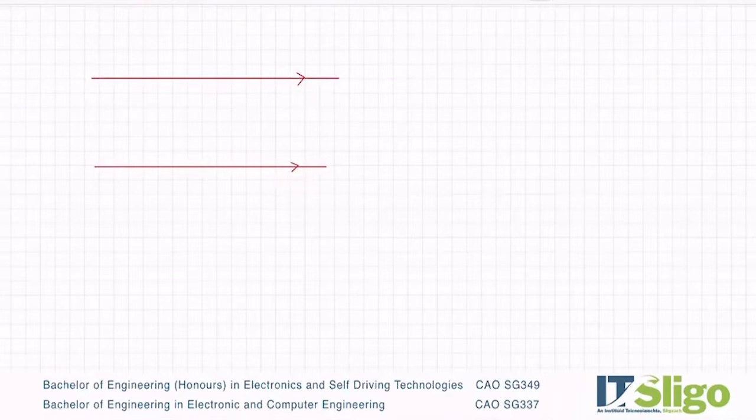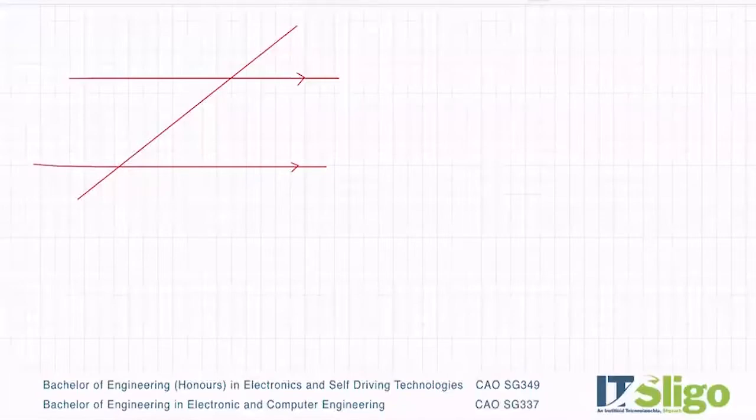And I'm going to draw another line just going down through them. I know they're parallel when I've got these little arrows on them. So I'm going to say this angle here is 40 degrees, and I can figure out an awful lot of angles in that diagram just from knowing that that particular one there is 40 degrees.